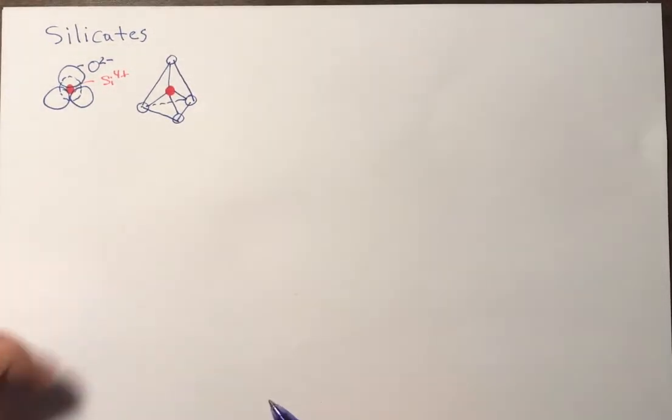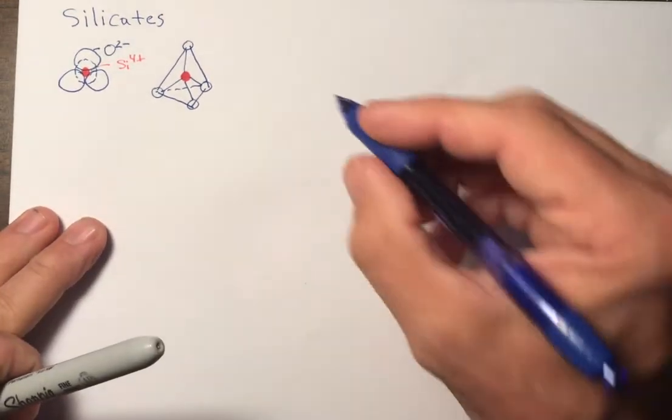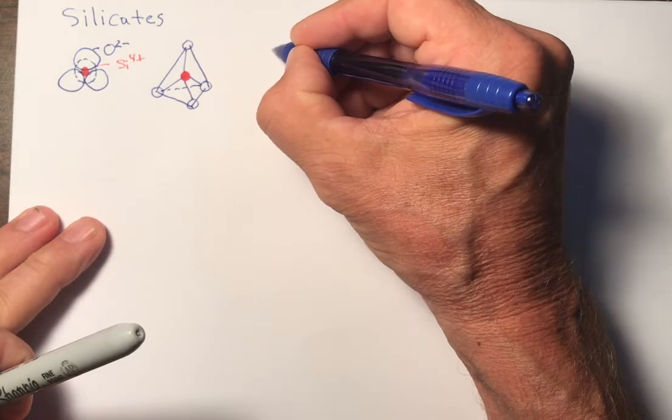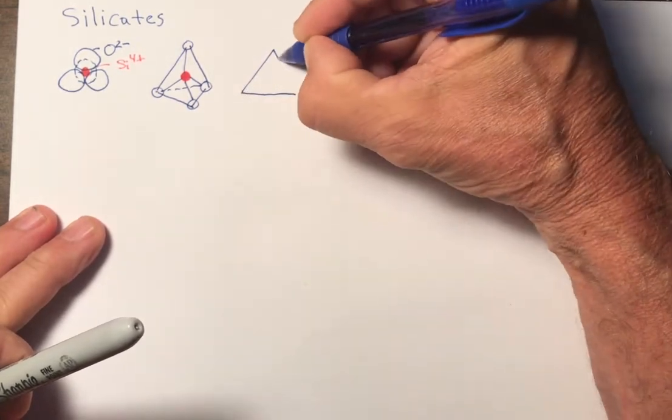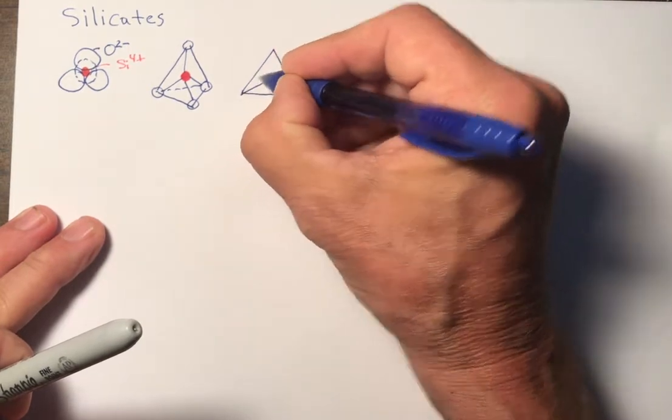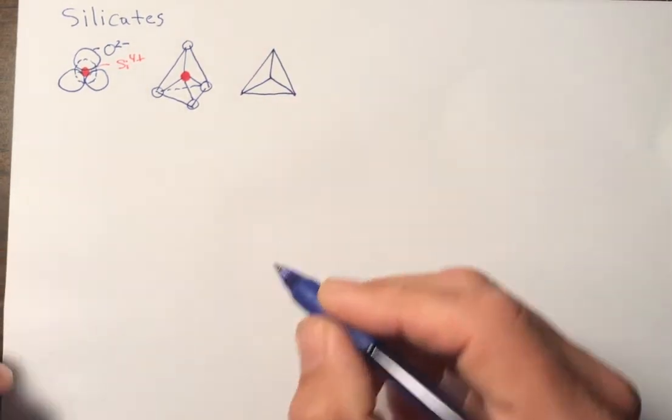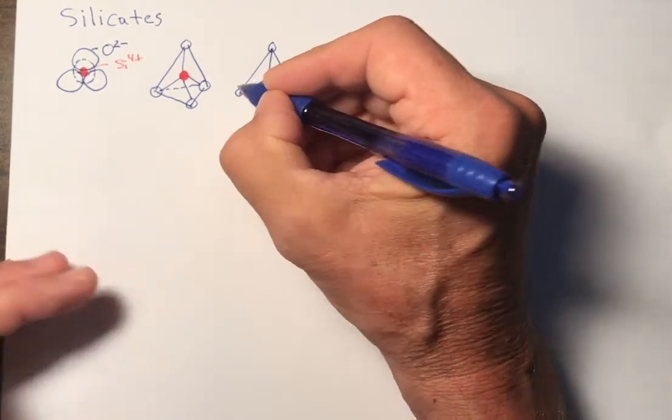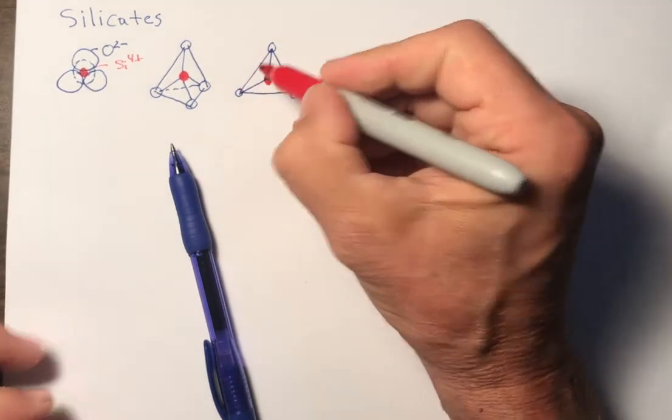And the final way is to simplify the schematics of this tetrahedron into a triangle where we're looking down at the top view. It looks like something like this. And there's the apex of the tetrahedron. And now we have oxygens at each one of these, and then in the center we have the silicon.